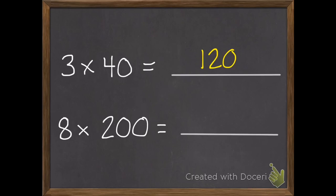Okay, three times forty equals one hundred twenty. And eight times two hundred equals one thousand six hundred.